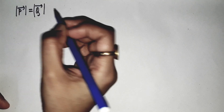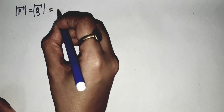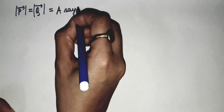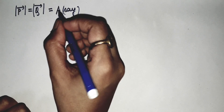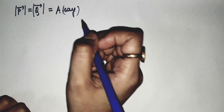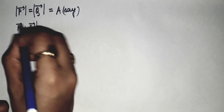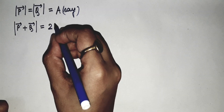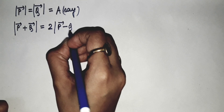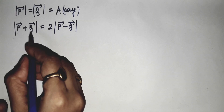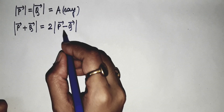Now let us solve this question. First, let us write that the magnitudes of the two vectors are the same, that is mod of P vector equals mod of Q vector. Let us write it as A, so the magnitude of both P and Q is A each. Now, mod of P vector plus Q vector equals two times mod of P vector minus Q vector — that is, the magnitude of P plus Q is two times the magnitude of P minus Q.